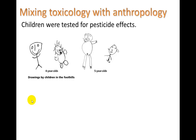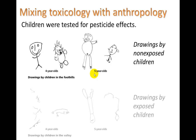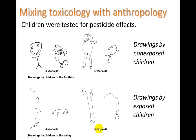An interesting case mixing toxicology with anthropology: children were tested for pesticide effects in two areas of Mexico. In the foothills, children had little pesticide exposure, and their drawings — a four-year-old's and a five-year-old's — are typical for their age. But drawings from children in the valley, where there was pesticide contamination, show significant developmental problems — they're not able to form drawings the same way. We can correlate this change to the chemical, but why and how it occurs would remain to be investigated.